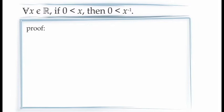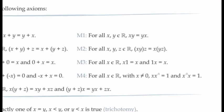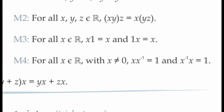For the next example, we prove: for all x in the real numbers, if x is positive, then so is its inverse. We introduce an arbitrary constant x, and using proof by contradiction, we assume the negation of the full conditional statement — that is, x is greater than 0 but x inverse is not greater than 0, meaning x inverse is less than or equal to 0. The key fact about inverses comes from axiom M4, which tells us that a real number multiplied by its inverse equals 1.